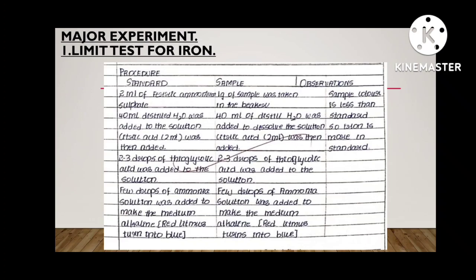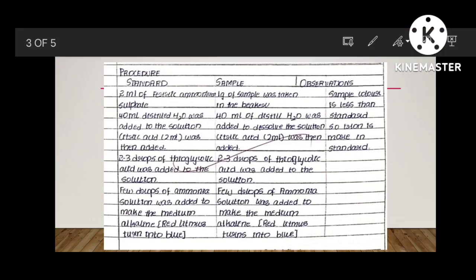Take two Nessler cylinders, one is standard, another one is sample. Add 2 ml of ferric ammonium sulfate in standard. For sample, take 1 ml of sample in the beaker, then add 40 ml of distilled water to dissolve the solution. Then dissolve that sample clearly.